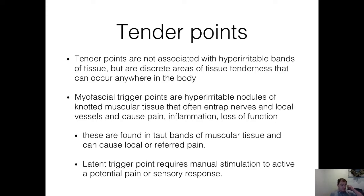What is a tender point? Tender points are not always associated with hyper-irritable bands of tissue, but are discrete areas of tissue tenderness that can occur anywhere in the body. Most people have tender points, commonly in the upper neck and upper shoulder blade or scapula area. Myofascial trigger points are slightly different — these are hyper-irritable nodules of knotted muscular tissue that often entrap nerves and local vessels, causing pain, inflammation, and loss of function. They're usually found in taut bands of muscular tissue and can cause local or referred pain.